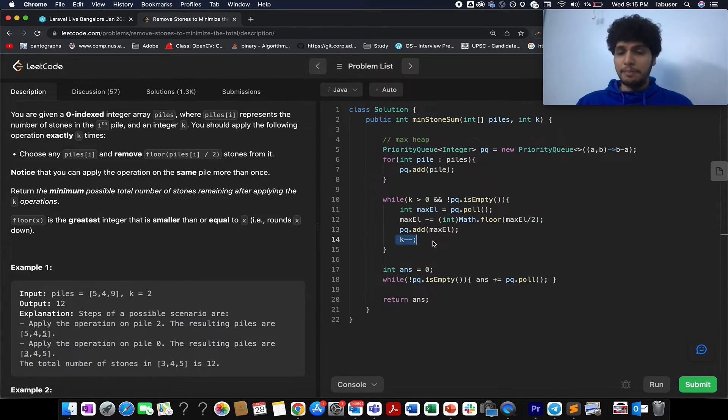I reduce the k pointer and once I am out of the loop, whatever elements remain in my heap will correspond to the answer, will contribute to the answer. I have created a variable ans, I have pulled out all the elements that are there in my heap, added to the answer variable and in the end I simply return that up.